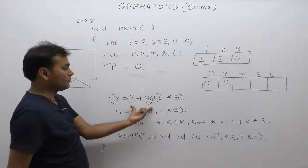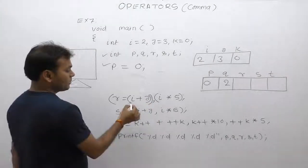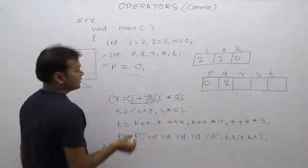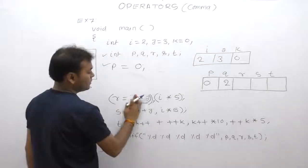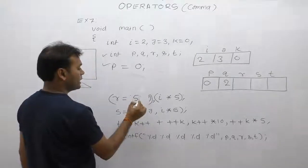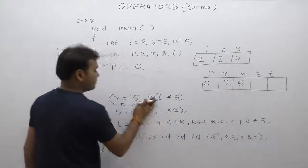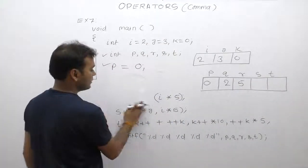Now solve the left-hand part of comma. First of all i plus j. Value of i is 2, value of j is 3. 2 plus 3 becomes 5. 5 is assigned to the variable r. Then remove it.